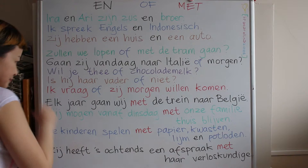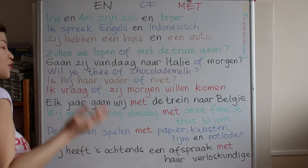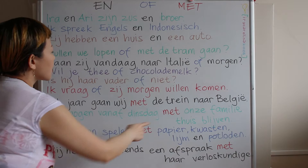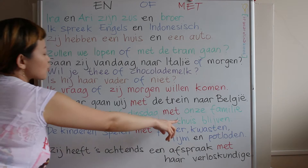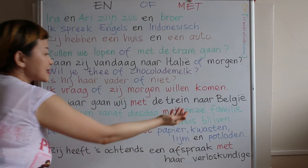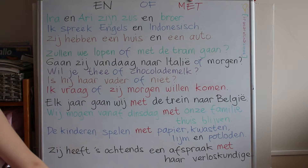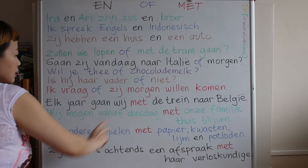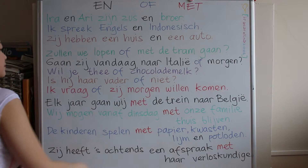'Wij, vanaf dinsdag, met onze familie, thuis blijven.' — We, starting from Tuesday, with our family, stay at home. 'Thuis blijven' means stay at home. And in Dutch or Netherlands, when you write the name of a day, you put it with a small letter — lowercase — not a capital letter. So 'dinsdag' for Tuesday.